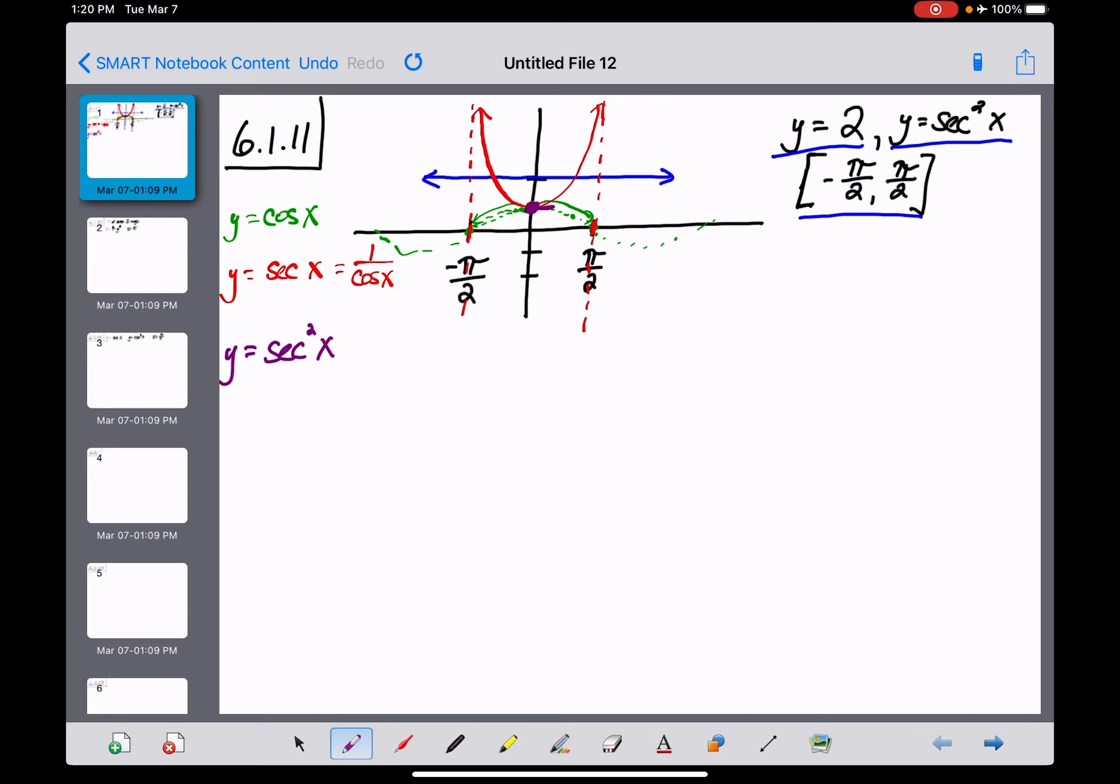This secant squared graph takes a slightly different shape than secant. It's a bit more squared off. At first it increases more slowly, then faster on either side. There isn't much difference between secant and secant squared for our purposes. I'm looking at the blue line y equals 2 and this purple curve y equals secant squared of x.